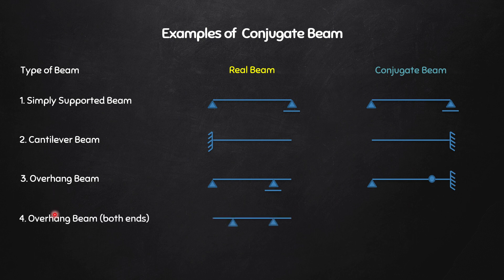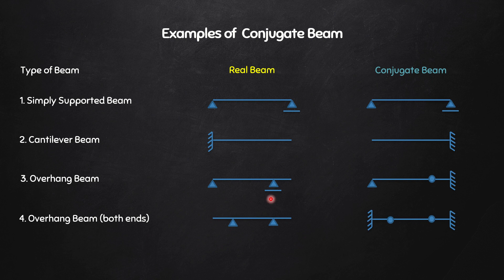For an overhang beam with overhang on both sides — free end, intermediate hinge support, another intermediate hinge support, and another free end — the free ends become fixed ends and both intermediate hinge supports become internal hinges. So the conjugate beam has fixed ends and two internal hinges. You can convert any real beam into a conjugate beam by analyzing each support one by one.